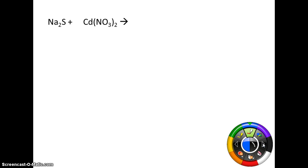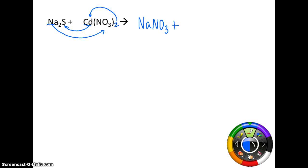You're not going to use the activity series for this, because the cations are always going to change places. Here we have sodium sulfide plus cadmium nitrate. Identify your cations first: sodium and cadmium — they're going to trade places. Sodium is going to bond to the nitrate; cadmium is going to bond to the sulfur. Sodium is +1, nitrate is −1, so you get NaNO₃. Cadmium used to be a 2+ (you can use the subscript to figure out the charge), and sulfide is 2−, so that gives CdS. Now we need to balance — we have two nitrate groups on the left but only one here, so we give it a coefficient of 2. That also takes care of the two sodium on the left.